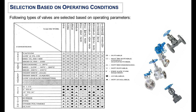Other criteria checked for valve selection include leakage — whether tight shutoff is required or not — and the size of the valve and piping. Generally, for pipe size greater than 10 inches, globe valve is not recommended. Valve selection also depends upon lining type, such as rubber, PTFE, or glass lining.